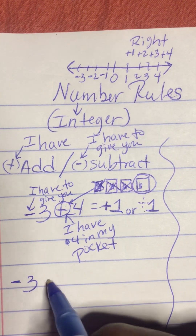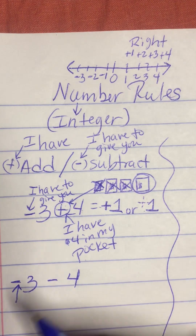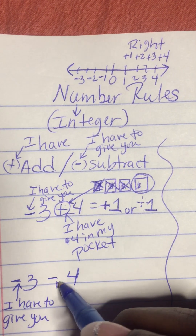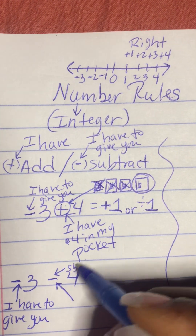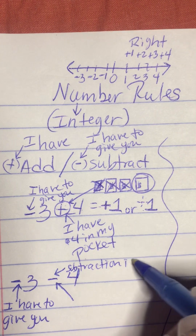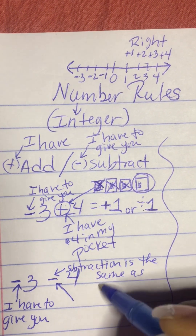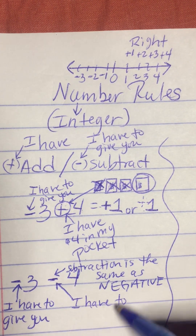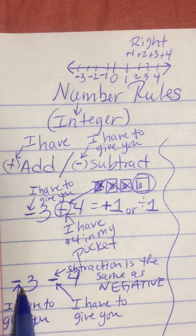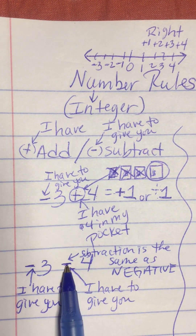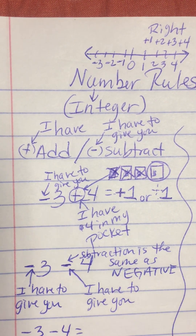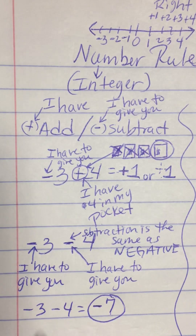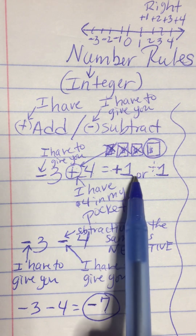Let's take negative 3 minus 4. Remember, this means five words: 'I have to give you.' Anytime you see a subtraction sign or negative sign, they're the same thing. Subtraction is the same as negative. The subtraction sign also means 'I have to give you.' So I have to give you $3 and I have to give you $4 — that means I have to give you $7. So negative 3 minus 4 is negative 7.